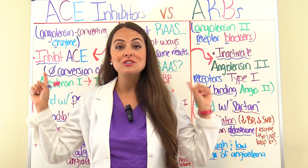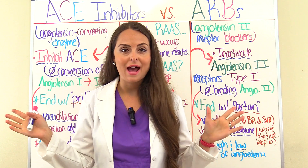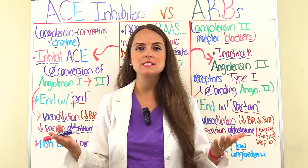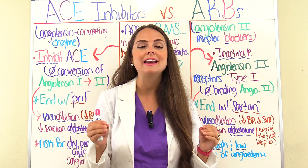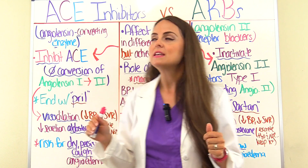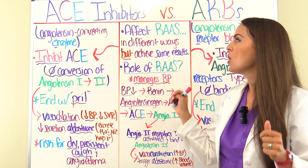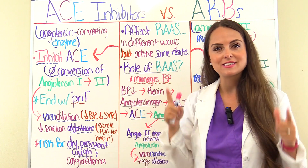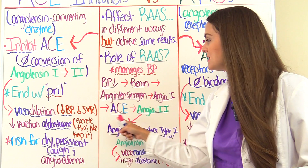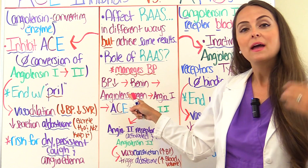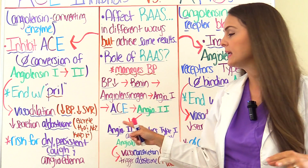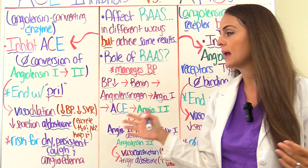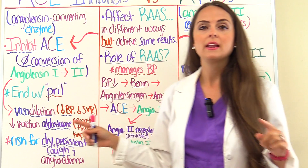Aldosterone causes the kidneys to keep sodium and water but excrete potassium. Now let's look at how these two medications affect RAS. ACE inhibitors are going to inhibit ACE — hence their name — so they inhibit this part of RAS. They prevent angiotensin I from turning into angiotensin II, so we don't have angiotensin II being able to do its job.